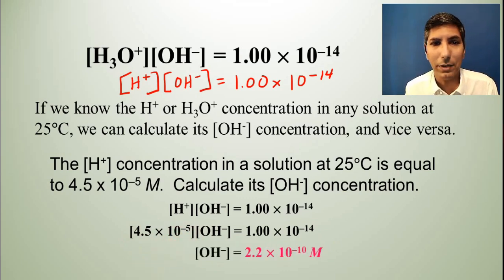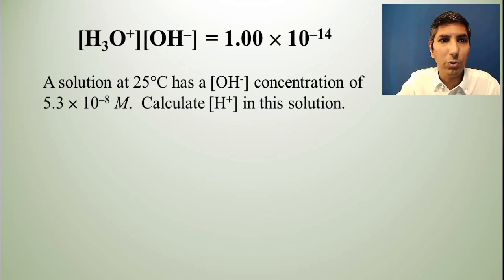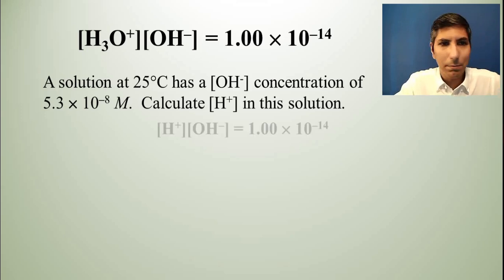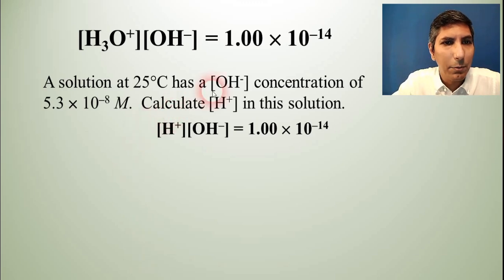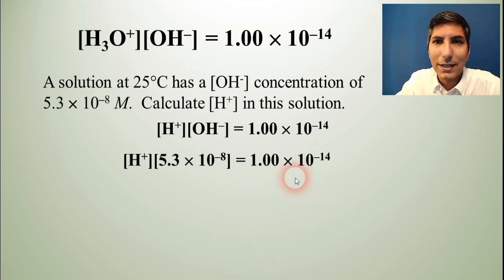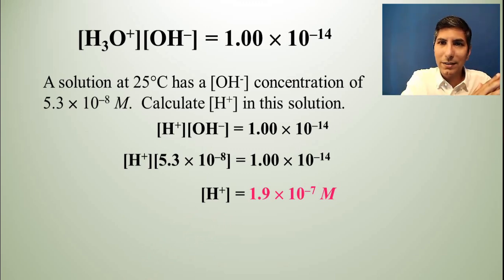You get a hydroxide ion concentration of 2.2×10⁻¹⁰ M. The same approach works in reverse: if a solution at 25°C has a hydroxide ion concentration of 5.3×10⁻⁸ mol/L, you divide 1.00×10⁻¹⁴ by 5.3×10⁻⁸ and the H+ concentration is about 1.9×10⁻⁷ mol/L. So if you know [H+] you can calculate [OH−] and it goes both ways using the autoionization of water.